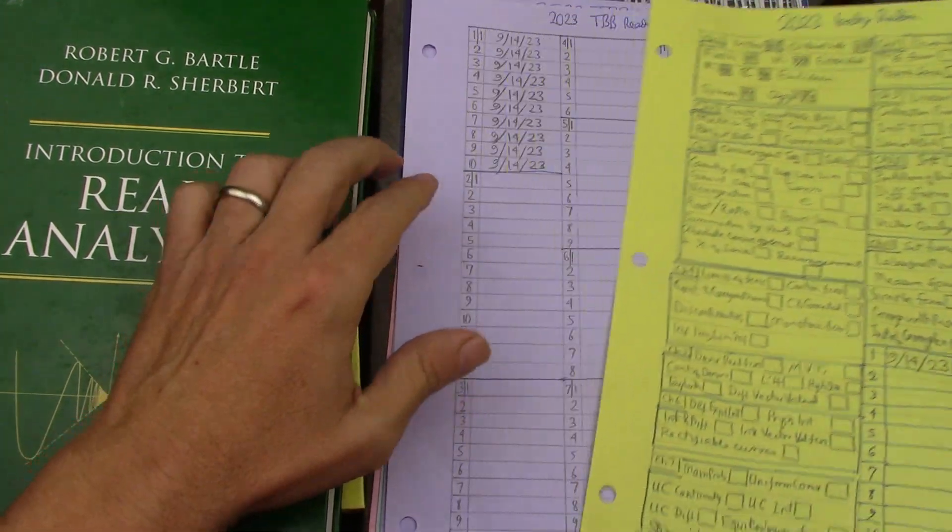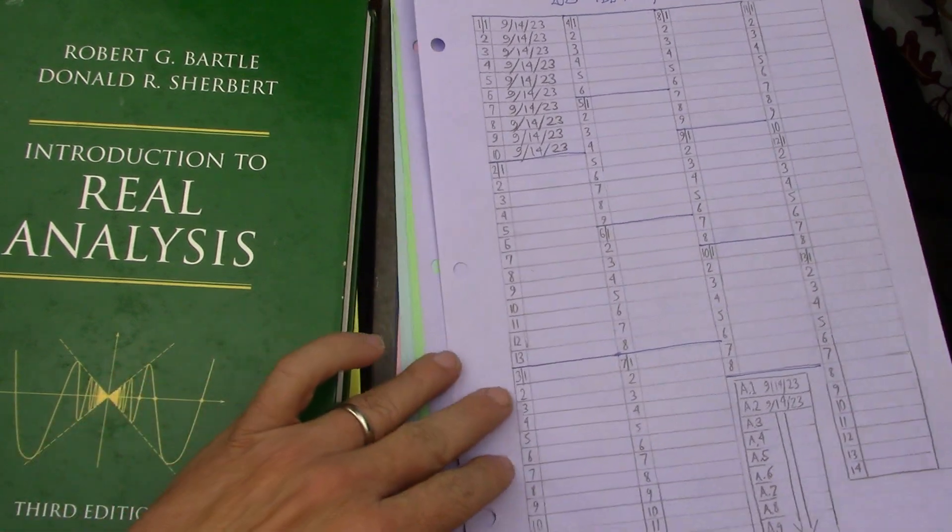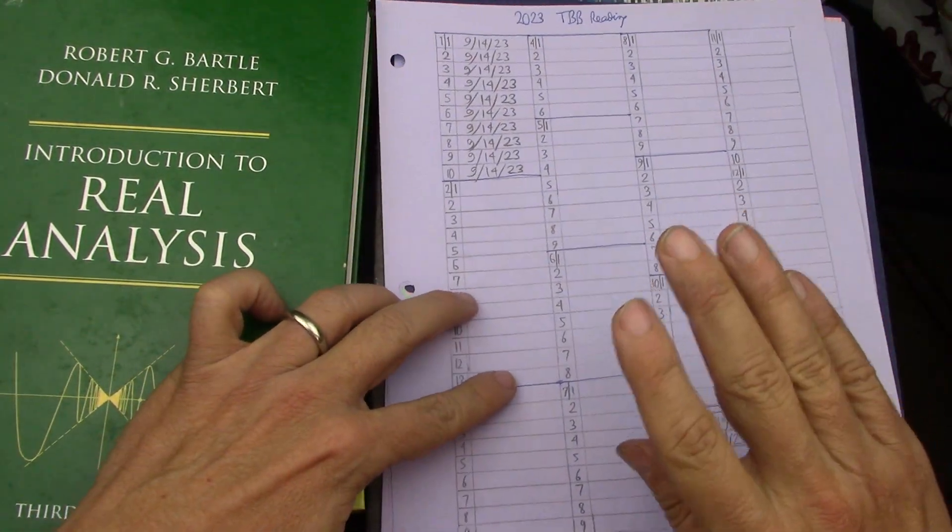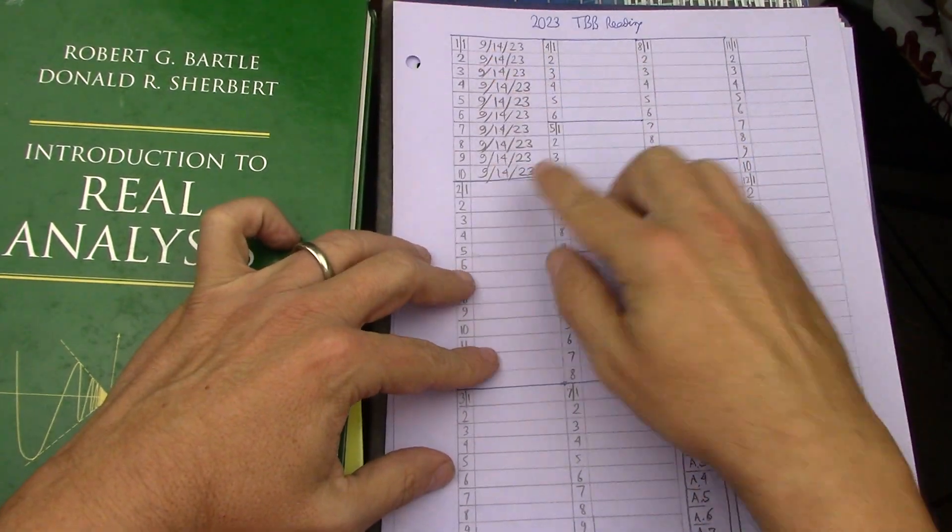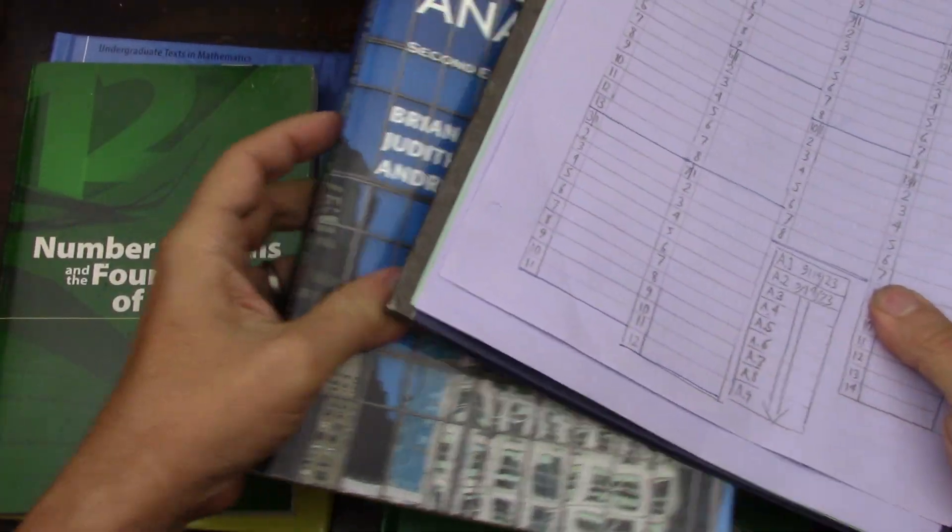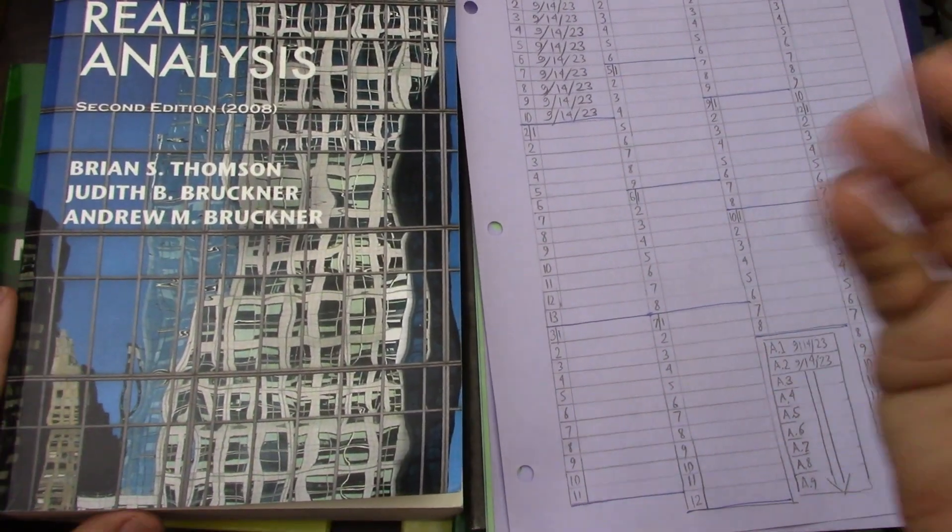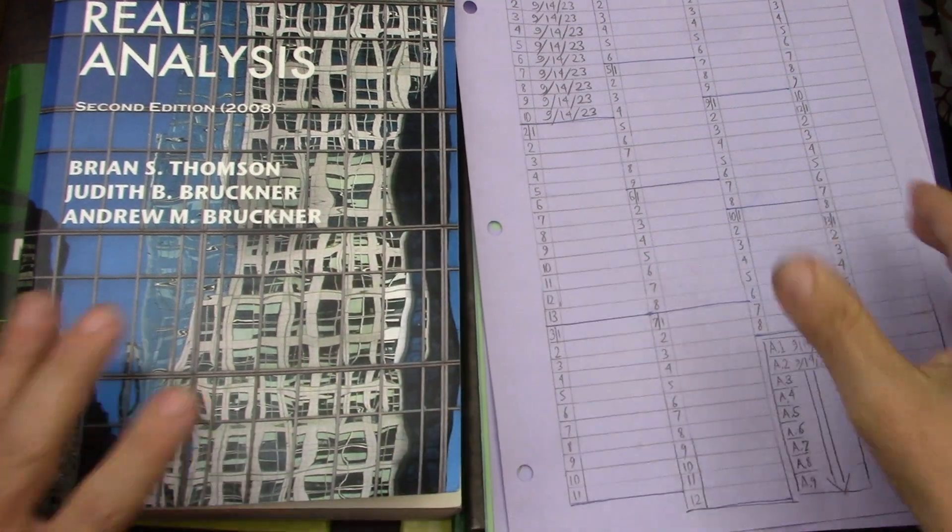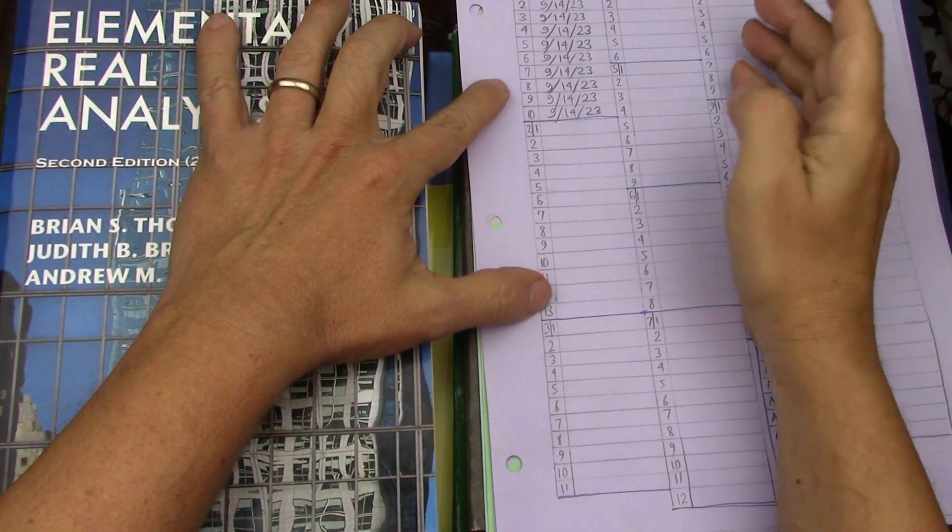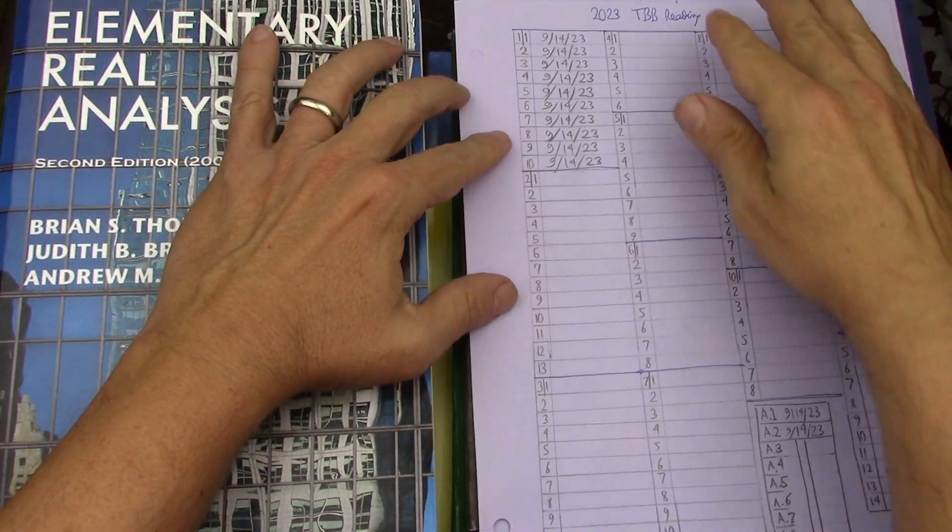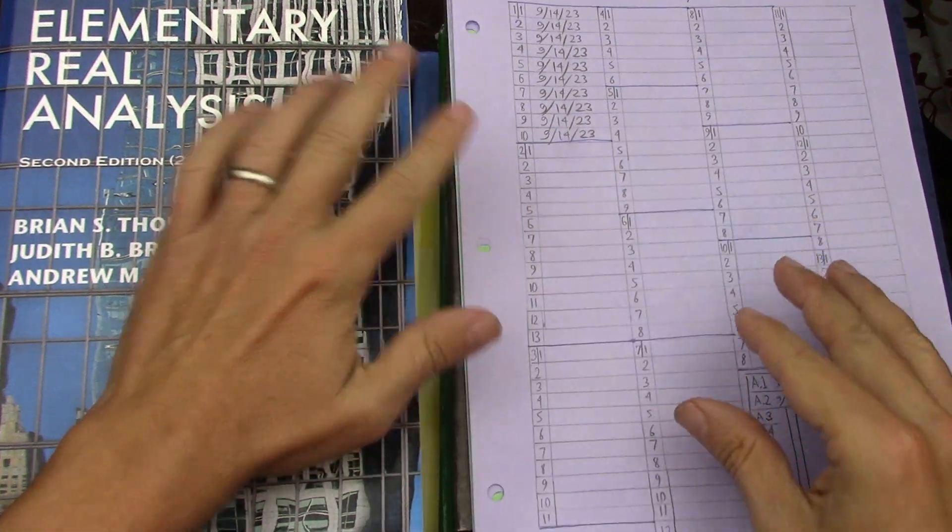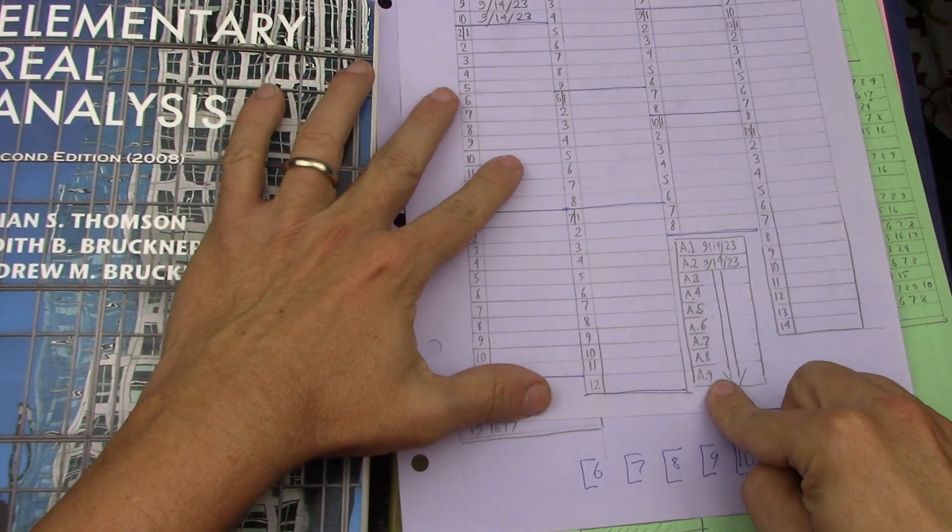I'll give an update of what I have read so far because I've only read, I haven't started doing problems. Chapter one of this monster, which I call TBB Thompson Bruckner Bruckner, I've shown this book before. Very quick this morning, I think in about an hour I read chapter one. I went through the appendix.